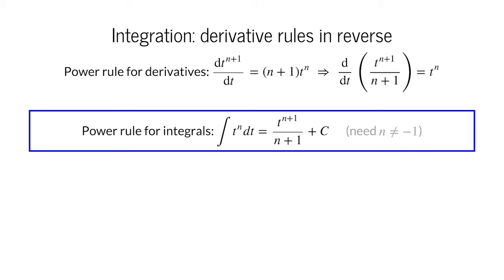Now, if n were negative 1, we'd be in trouble, as we'd be dividing by 0. So this rule only works when n is not equal to negative 1.